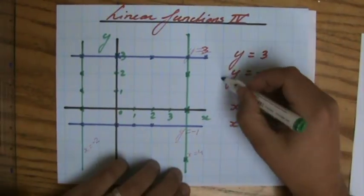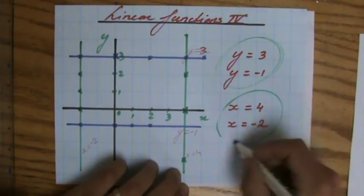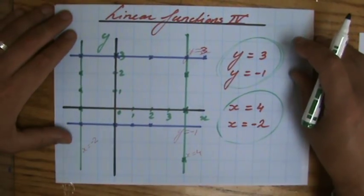So these are horizontal lines, and these are vertical lines. Important to understand those equations.